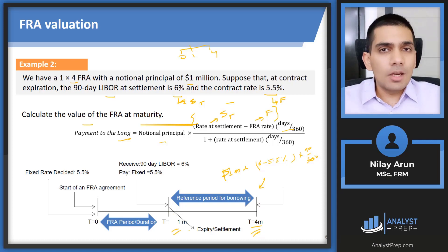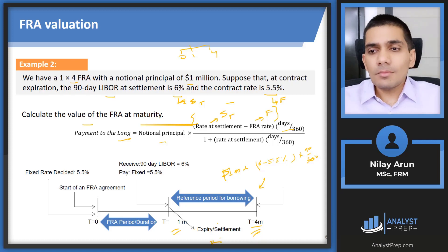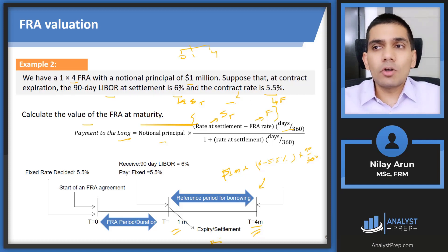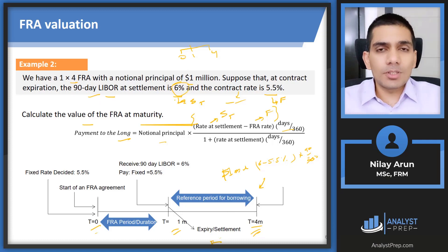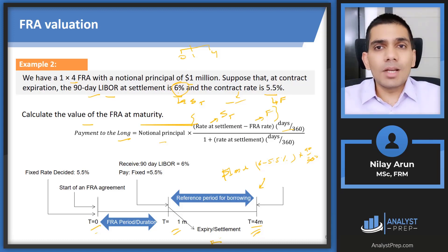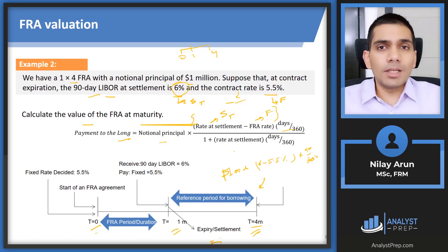Whatever figure we have calculated at t=4 must be brought back to t=1 (one month). The discounting rate to use here is not the contract rate — the contract rate was locked in at t=0 and is not available at t=1. The correct discounting rate is the market rate applicable between one and four months, which is the 90-day LIBOR of 6%. Never use the FRA rate for discounting; always use the rate at settlement unless another rate is explicitly provided.